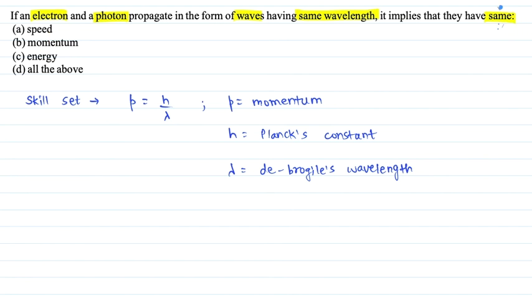Speed and energy do not depend on the wavelength. Speed and frequency depends on the same, goes with energy, but the wavelength is not the same. If the other terms are different, they will be different. But the momentum is the same. The other term is constant. The momentum will be the same.